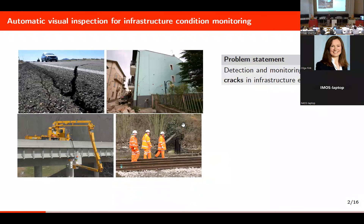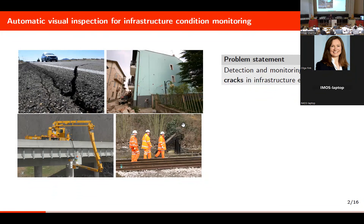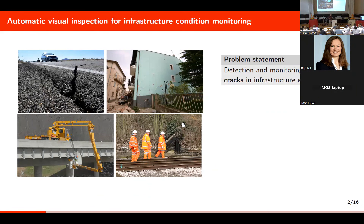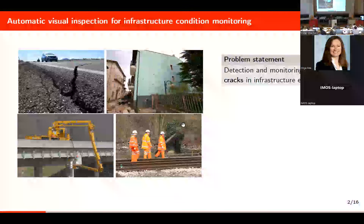Cracks can appear in various types of infrastructures — civil engineering or transportation — such as roads, buildings, walls, bridges, or railway infrastructure elements. To ensure the safety of a structure and that the element can retain its function, we need to detect cracks and, of course, when they start to develop, we need to monitor their evolution to trigger maintenance operations.